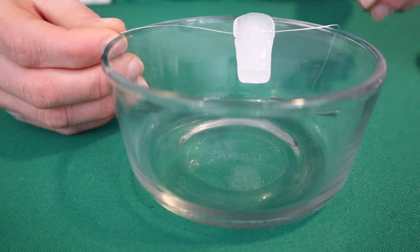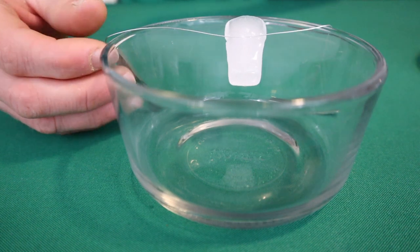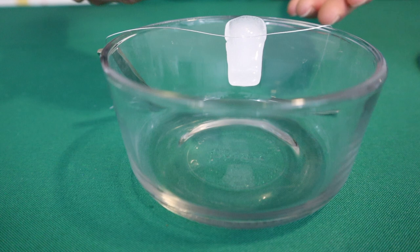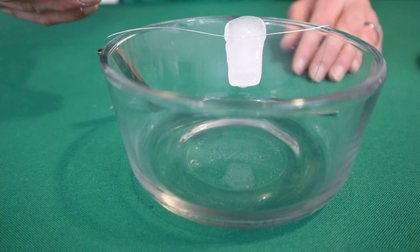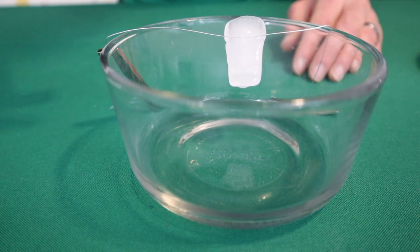Most substances freeze solid when they experience an increase in pressure, but not water. Ice actually melts when it experiences an increase in pressure and because of that, a wire can pass right through an ice cube in a process called regulation.